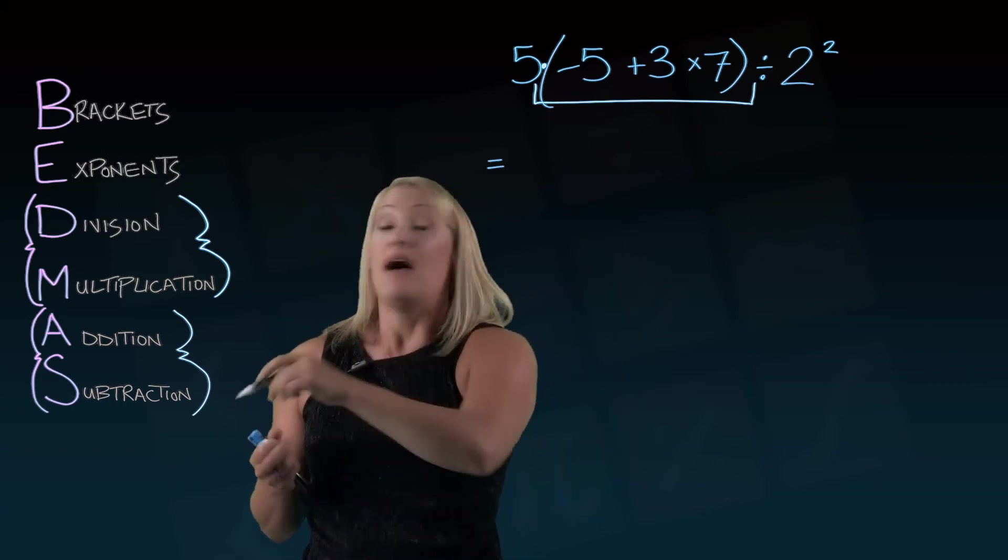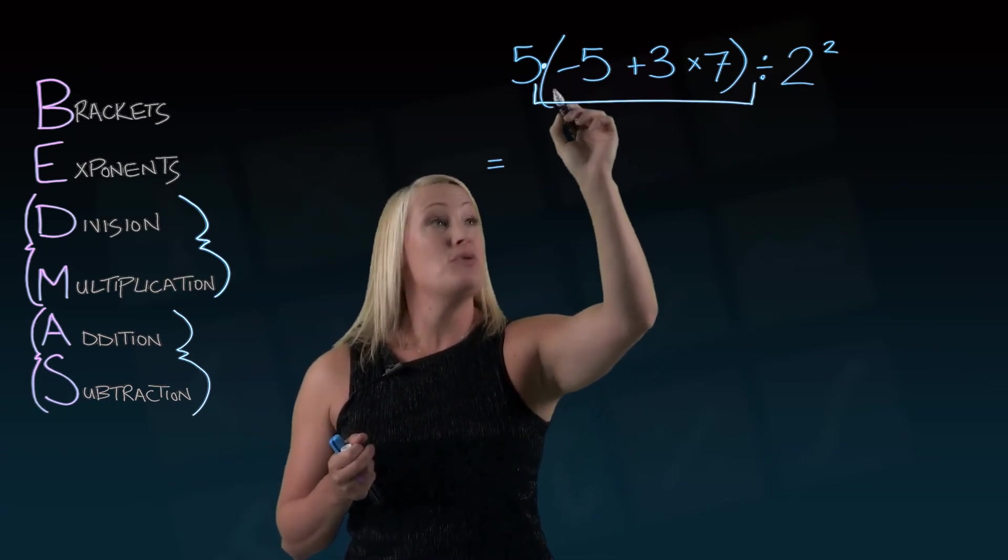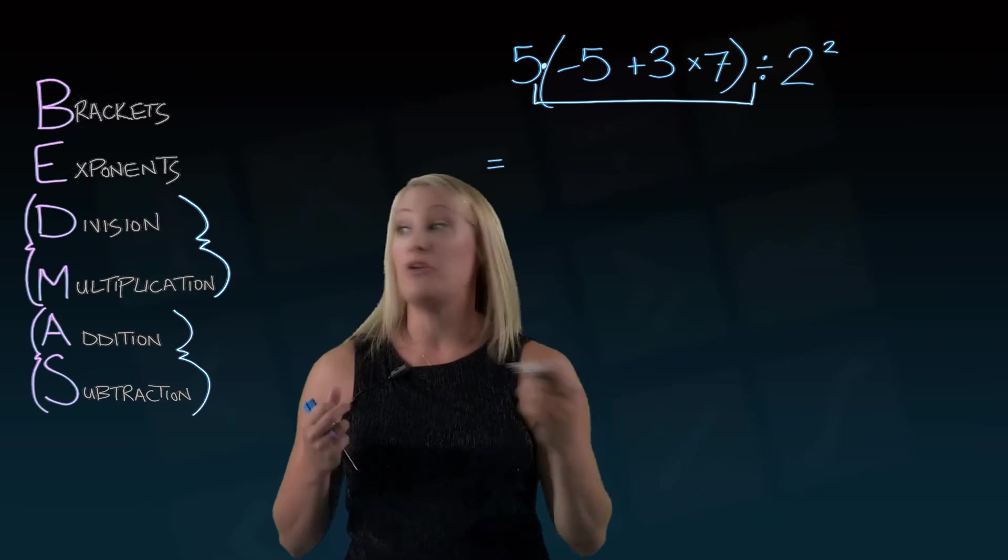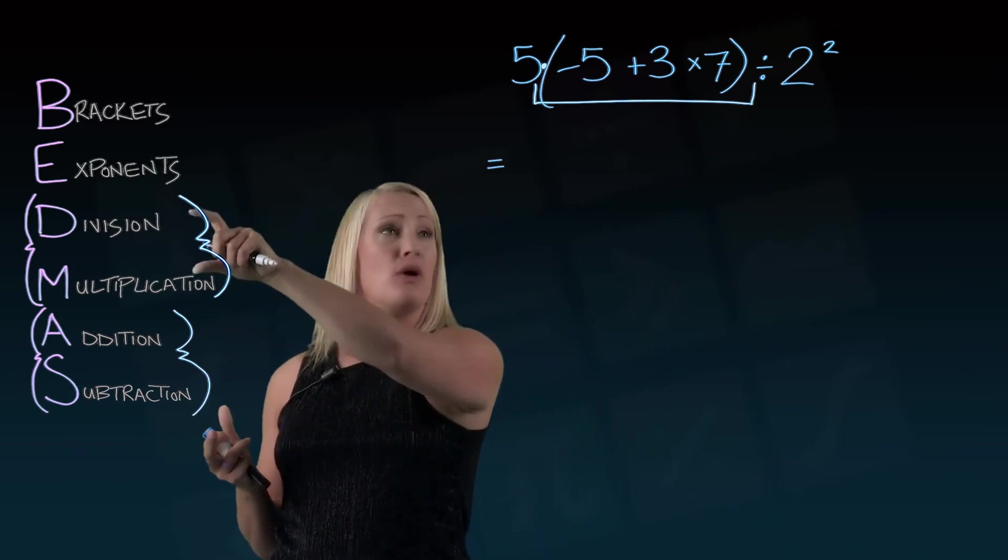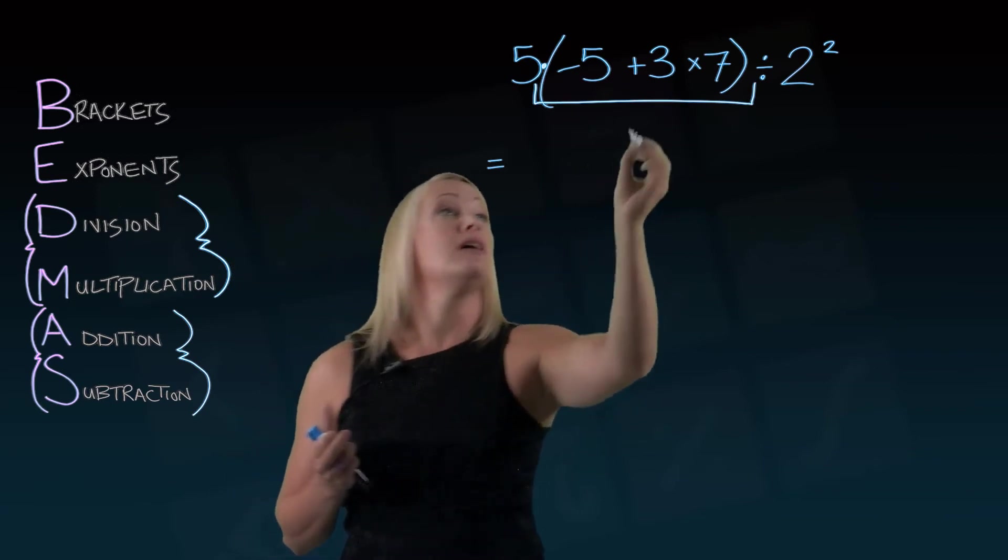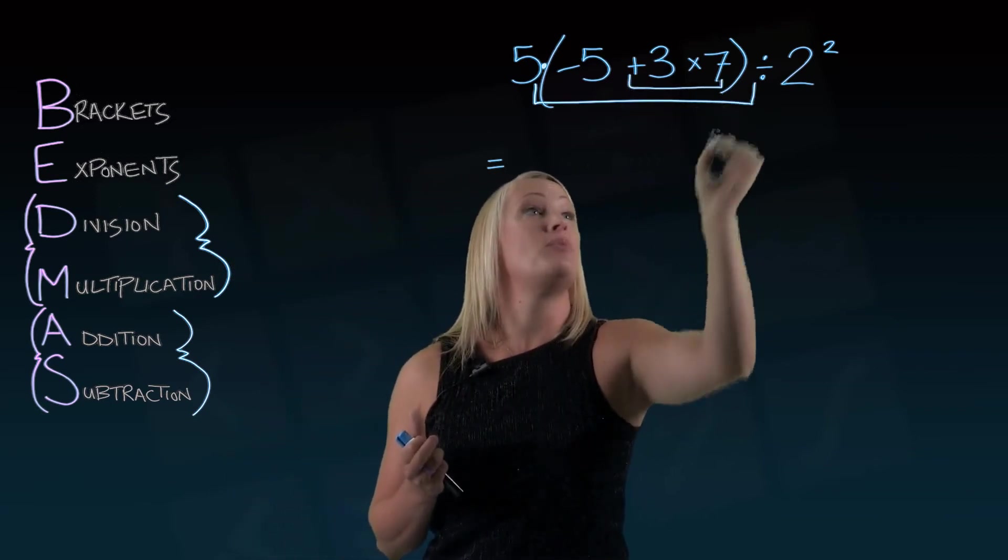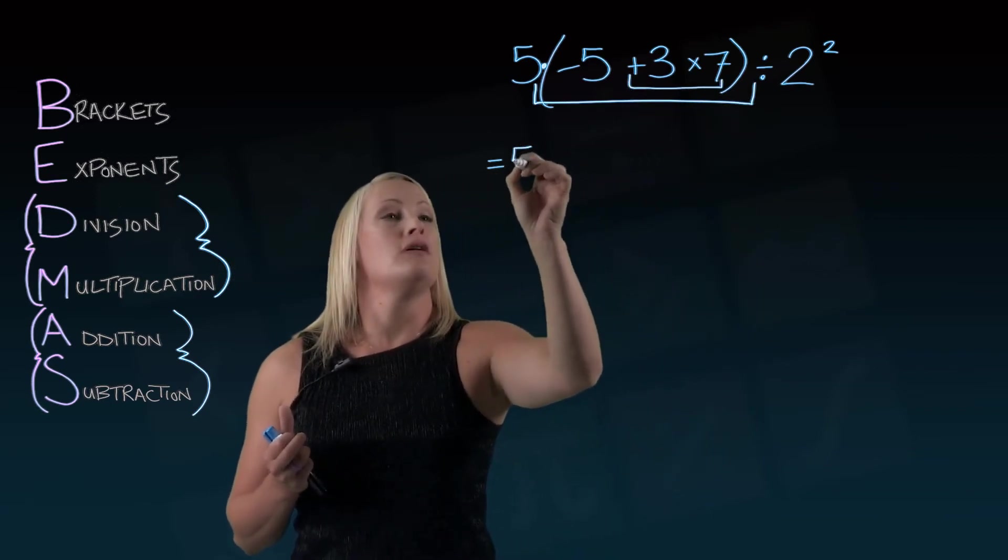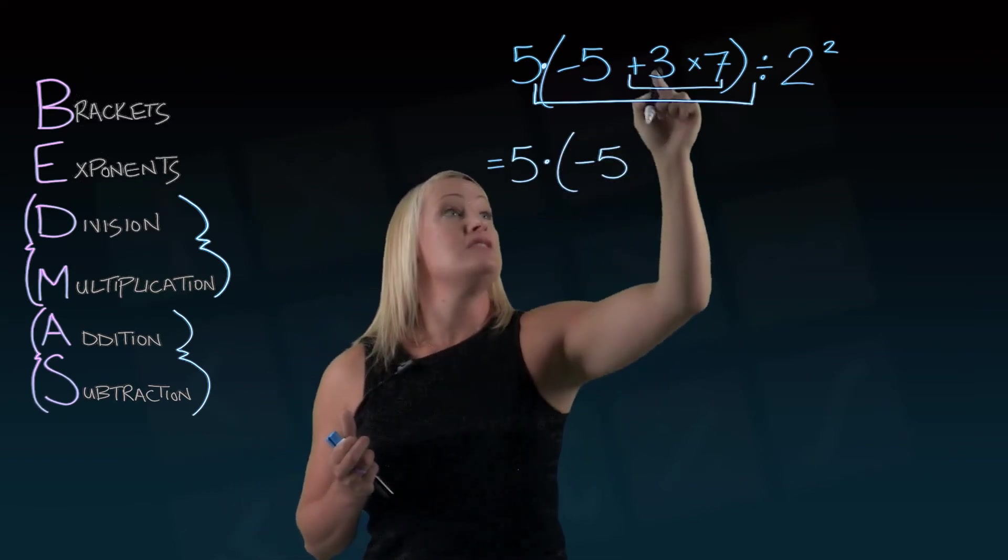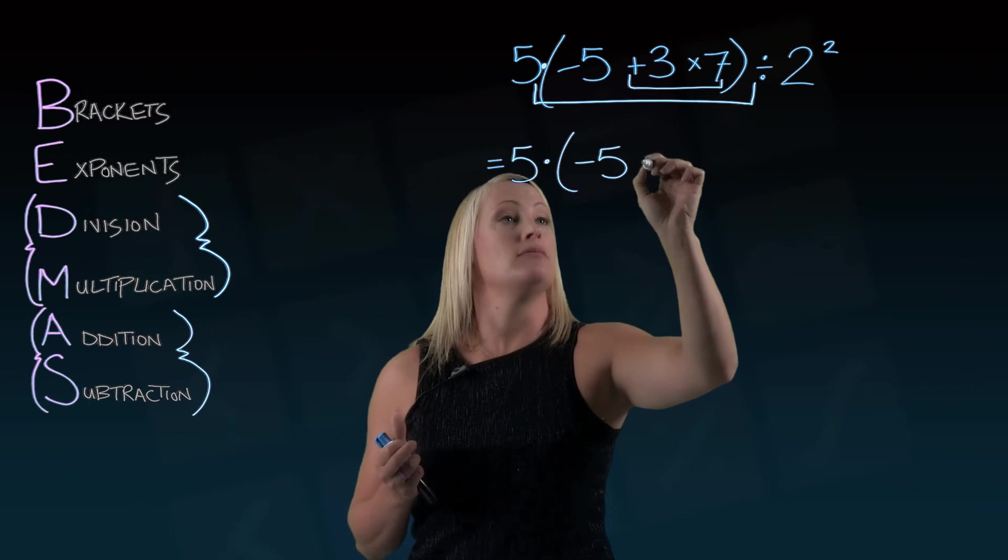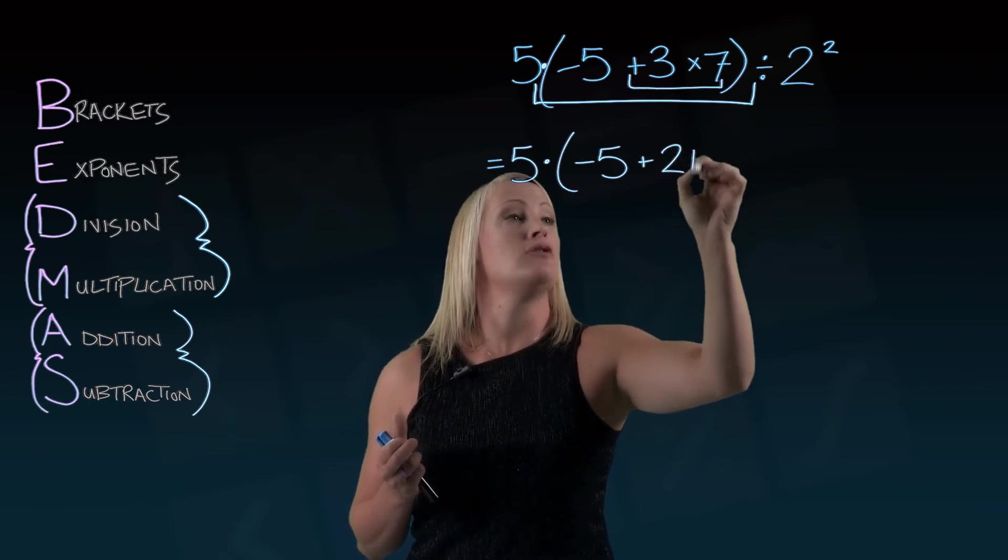Now inside the brackets, we also have to follow BEDMAS. I can't do negative 5 plus 3 first because addition and subtraction happens at the end. I'm going to start with division and multiplication. So I actually have to do this little part of the bracket first. So I'm going to write everything else the way I see it and I'm going to deal with 3 times 7 which is positive 21.